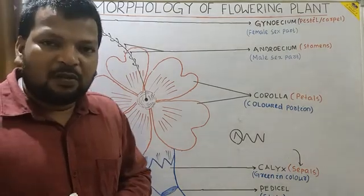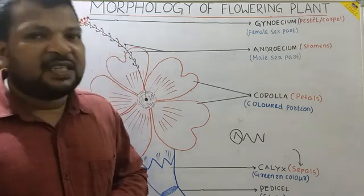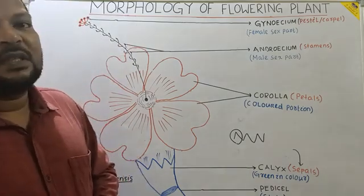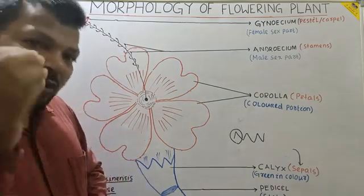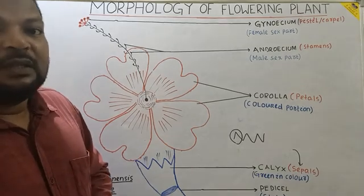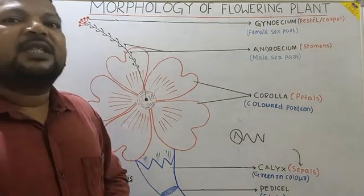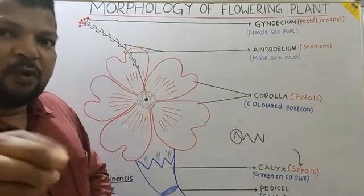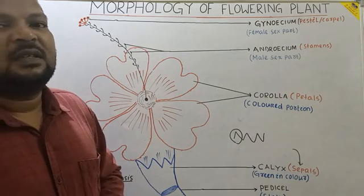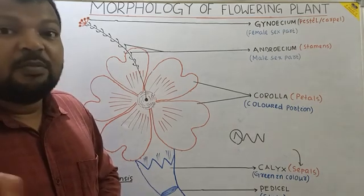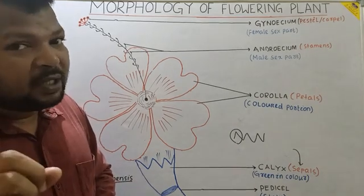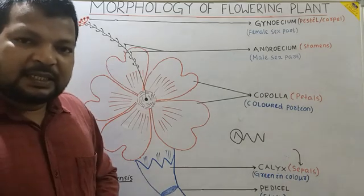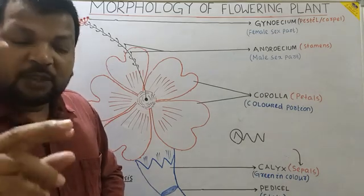The function of Calyx: it is greenish in color, which means it possesses chlorophyll. Due to the presence of chlorophyll, it can also perform photosynthesis, though that is not its major function.